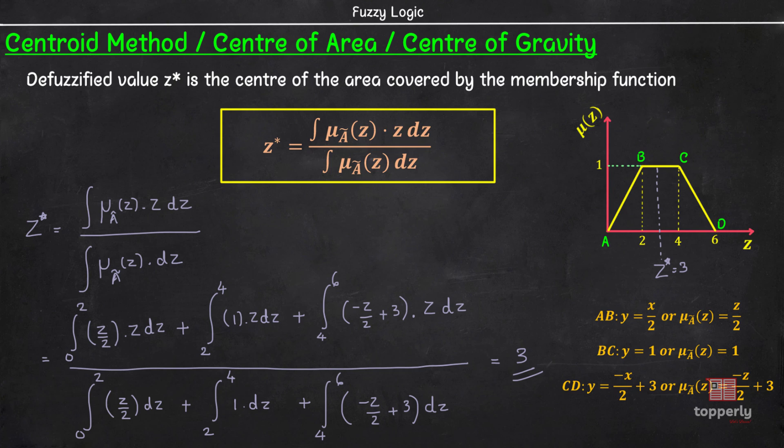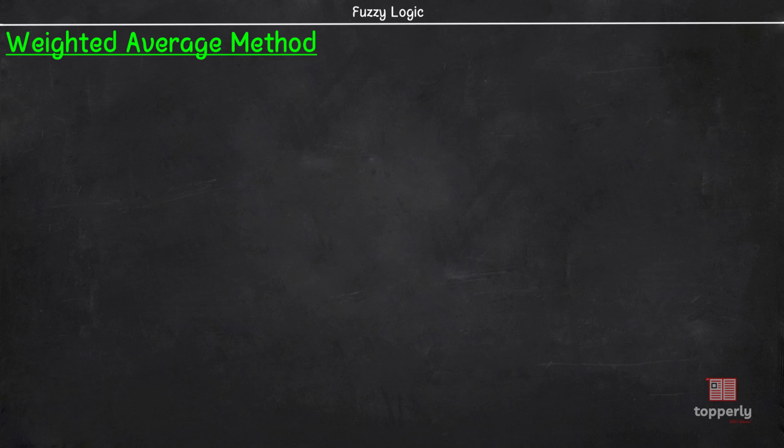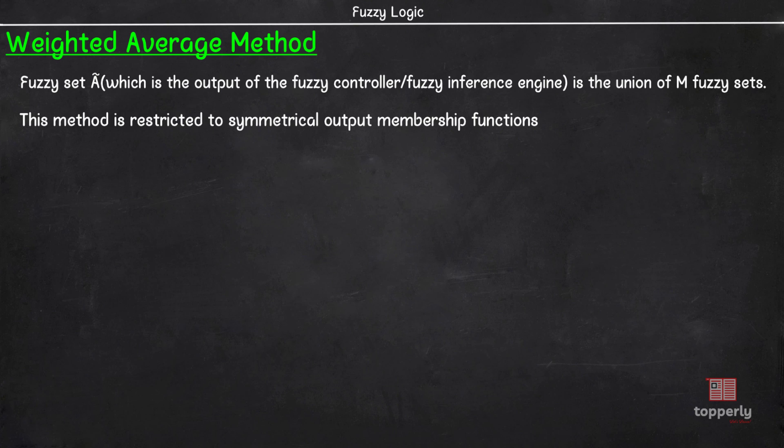Next method for defuzzification is the weighted average method. Before learning this method, you have to keep in mind that the fuzzy set A whose defuzzified value we need is an output fuzzy set formed by the union or intersection of M output fuzzy sets. This also means that we know all the M output fuzzy sets and not just the aggregated fuzzy set A. One more point to note is that this method is restricted to symmetrical output membership functions.